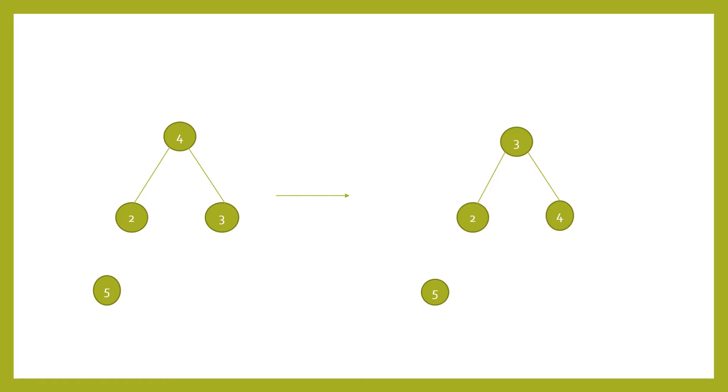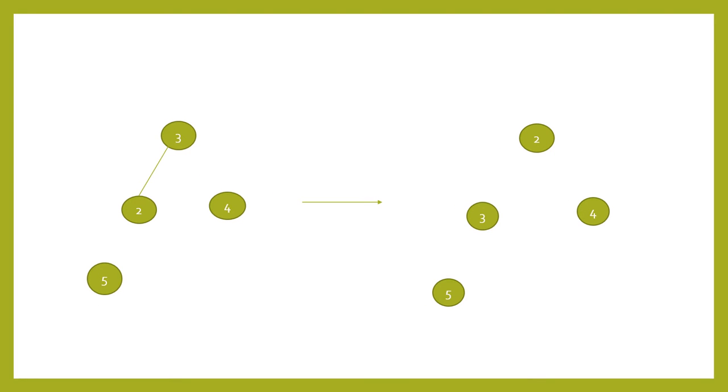Then the tree becomes 3 and 2. Both 5 and 4 are now sorted.